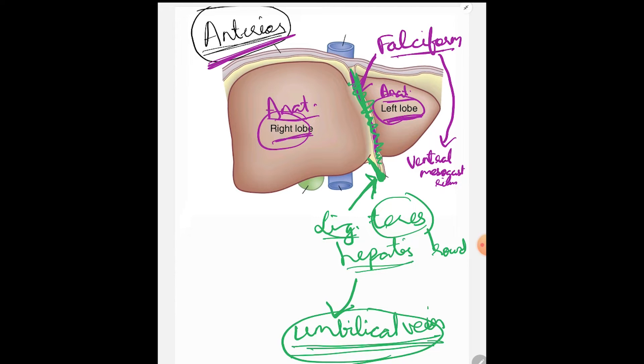One is the falciform ligament and the next is the ligamentum teres hepatis. You have to notice where the spotter is kept. If it is this sheet, it is falciform ligament. If it is this lowermost thickened band, then this is ligamentum teres hepatis.